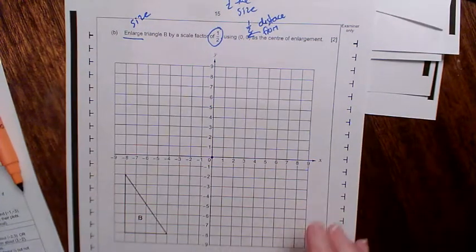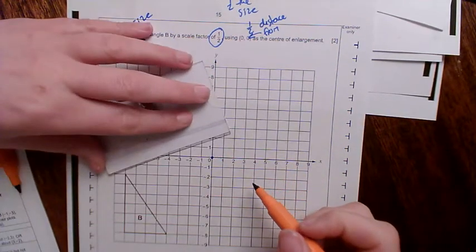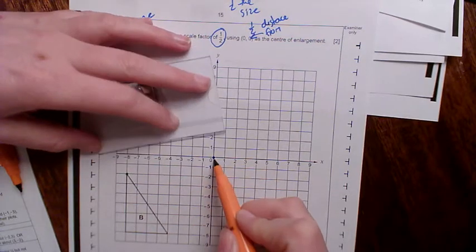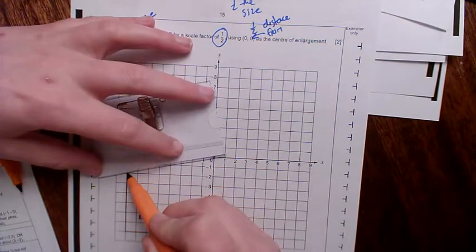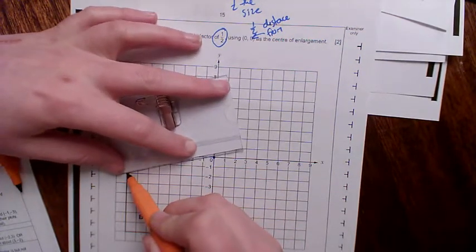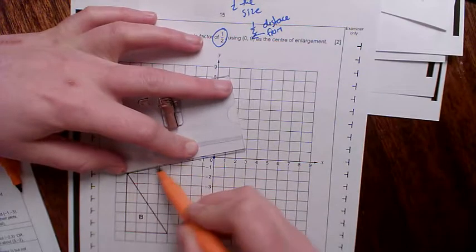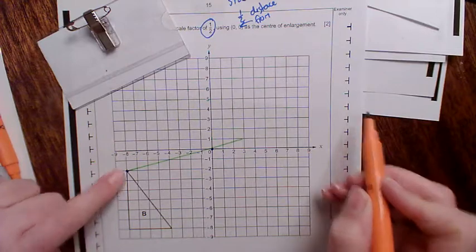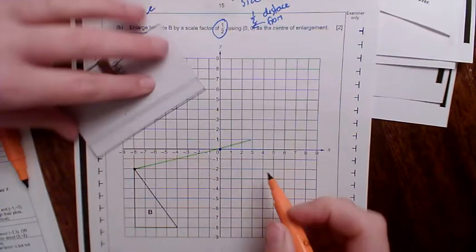And the very first thing I always do with an enlargement question, whether I use them or not, is I draw my guidelines on from the corner, from every corner of the shape, to the centre of enlargement. So from there, to the centre, through the centre, and when I've got a full-length ruler, I'll extend the line all the way off the grid.